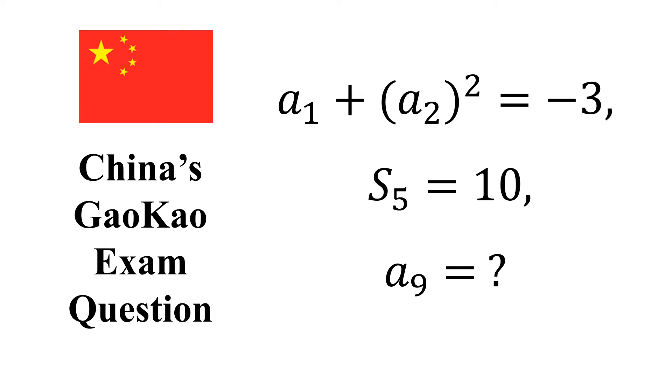Hi everyone, in today's video we are going to solve this China's GaoKao exam question. The question is: if a_n is in arithmetic progression and a_1 + (a_2)² = -3, and S_n is sum of the series up to n terms and S_5 = 10, what is the value of the ninth term a_9?